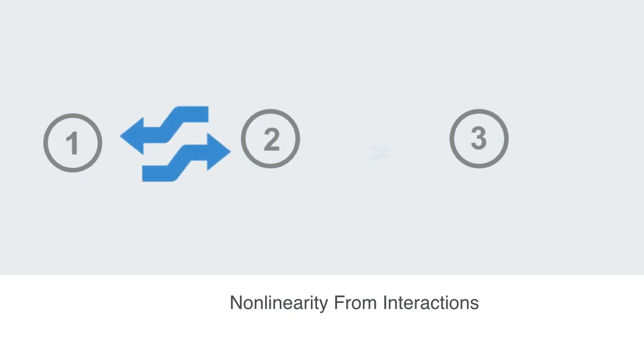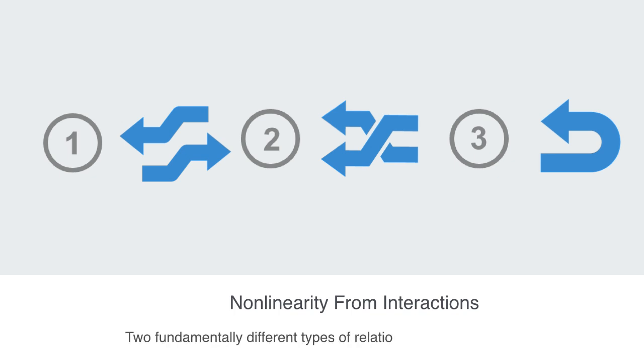As we've previously discussed, the nature of the interactions between components within a system is a key source of non-linearity. In this short module, we're going to give a quick overview to the two fundamentally different types of relations that result in non-additive combinations, what we call synergies and interference.